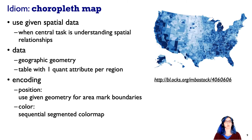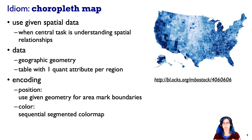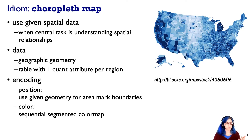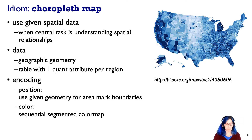A choropleth map is where we color code stuff on a map — I'm sure everyone's seen these. Since we're using given spatial data, the central task is understanding the geographic distributions and spatial relationships. The data combines geometric boundaries of geographic regions with a quantitative attribute looked up in a table. Here's an example of a choropleth map in D3. For the encoding, we use the given geometry of those area mark boundaries and then color code the attribute — in this case, a sequential segmented color map going from min to max.